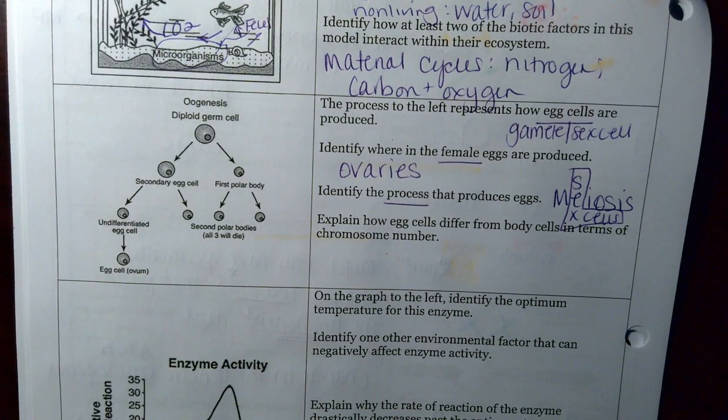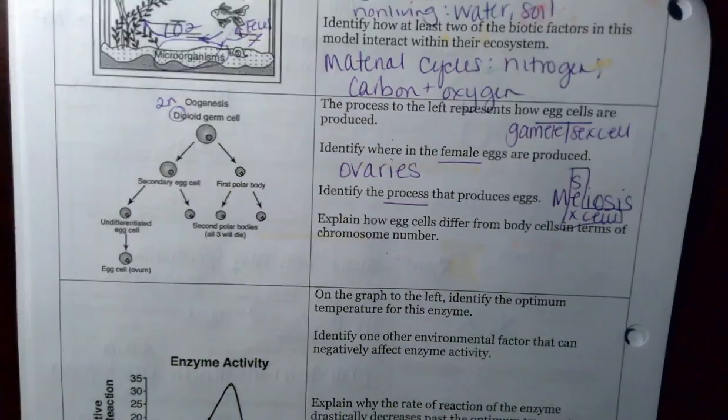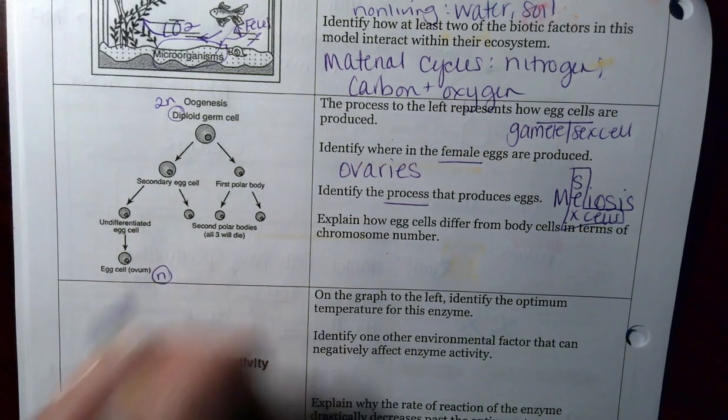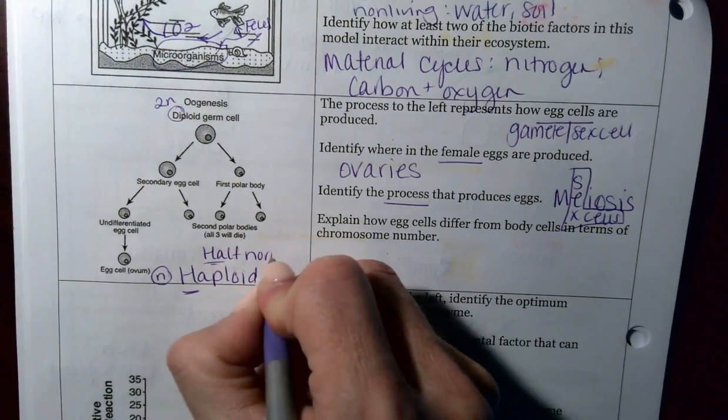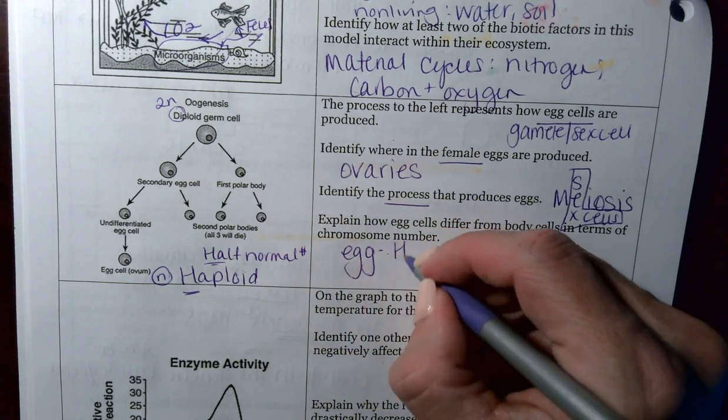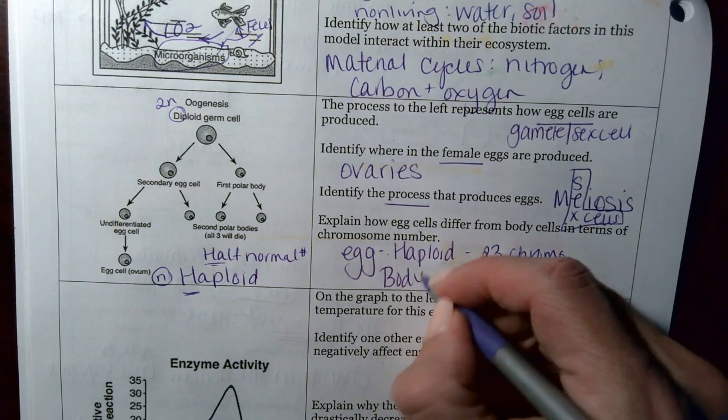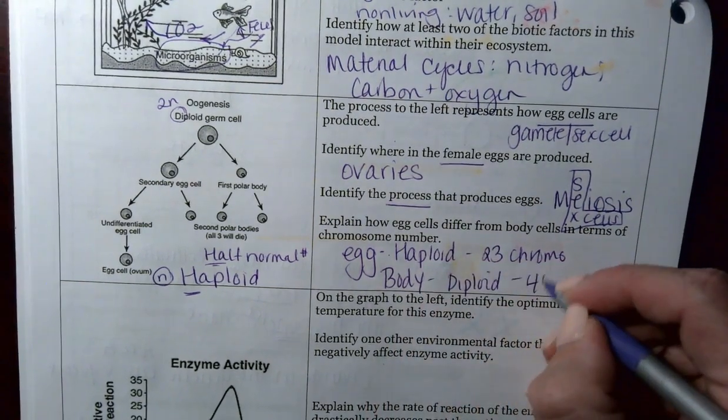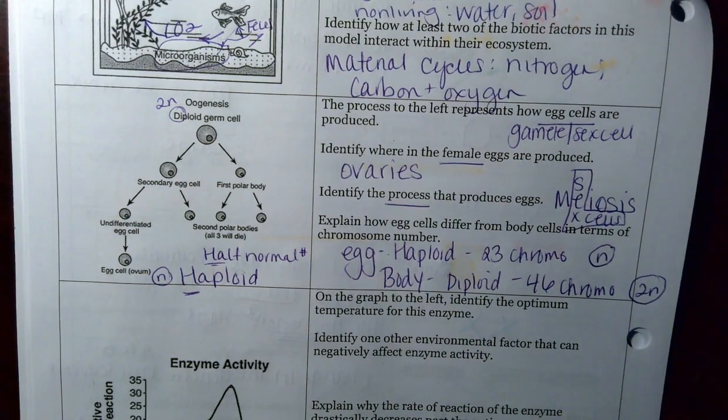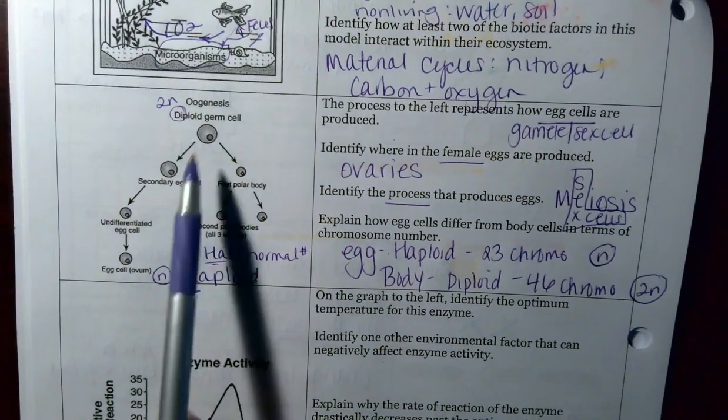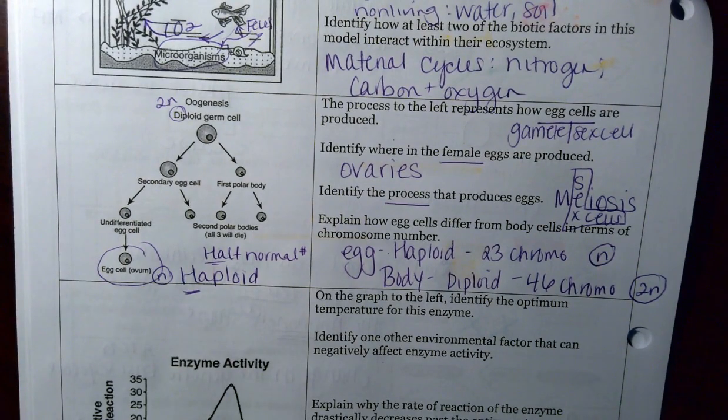And how do egg cells differ from body cells in terms of chromosome number? Note here, this says diploid. Diploid means two. Those are going to have two N in terms of their chromosome number. If you're looking at an egg cell, an egg cell just has N. That's going to be called haploid. Haploid has half the normal number. So egg cells are haploid. For humans, that's going to be 23 chromosomes. Body cells are diploid. Diploid has 46 chromosomes. And a lot of times I do see it represented as an N or a 2N. They do give you this other information. These guys will all die. For females, when one of these diploid germ cells divides, only one egg is going to be a functional egg that can be fertilized by sperm.